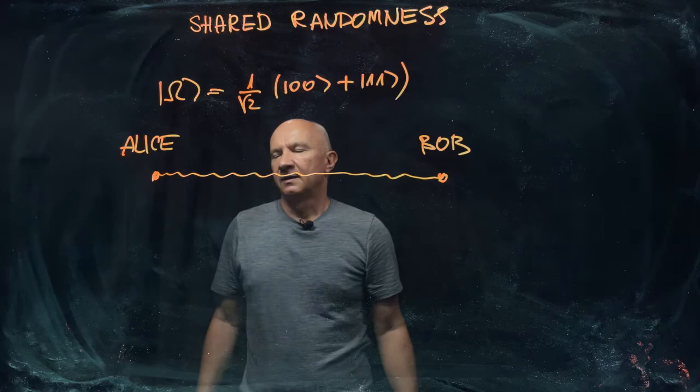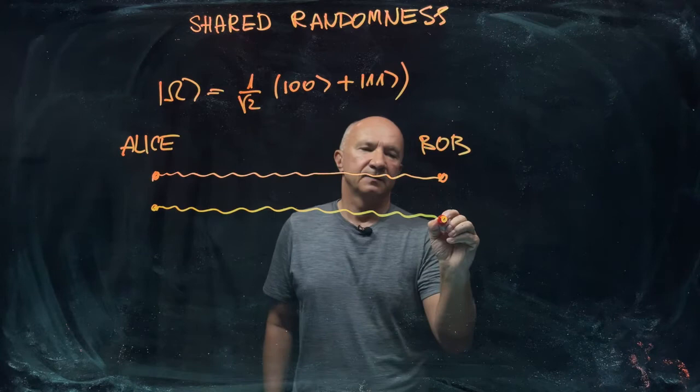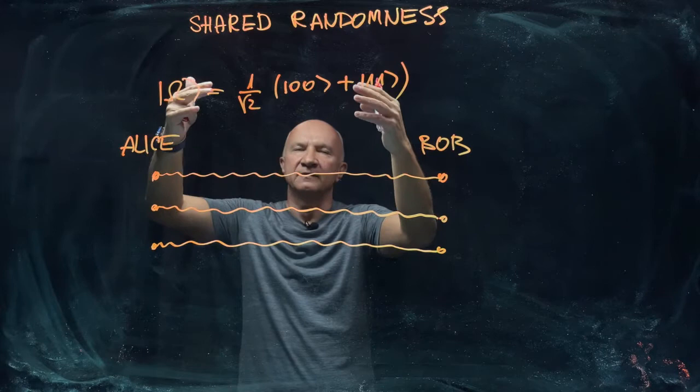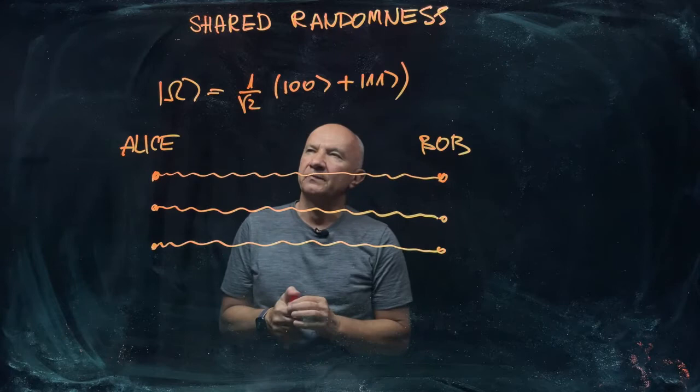In fact, imagine that you have many pairs of qubits prepared in entangled state. So Alice and Bob share not just one pair in this state, but many. So one interesting feature is the following.